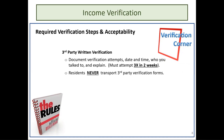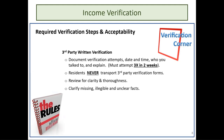The first attempt at verification must be a third-party written verification form. Document your verified attempts with date, time, and who you contacted. This needs to be attempted three times over two weeks. The third-party written verification is never transported by the resident to the third-party verifier — it can be sent by mail, fax, or email. Make sure you verify how it was transported. If the tenant walks it back to you, you need to re-verify with a phone clarification.